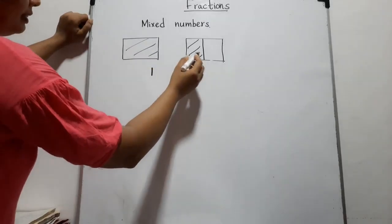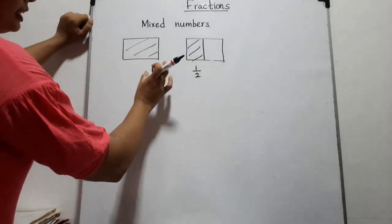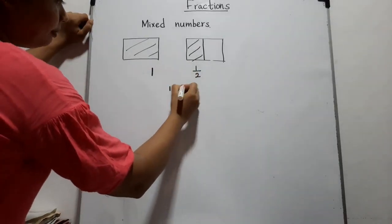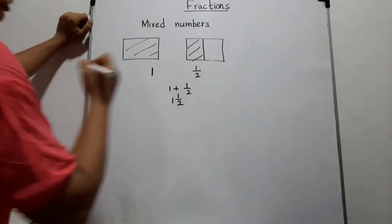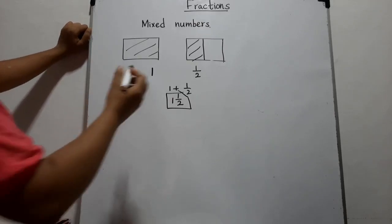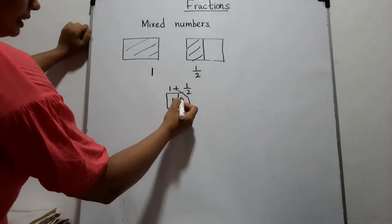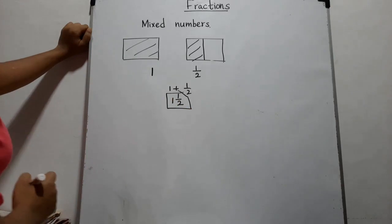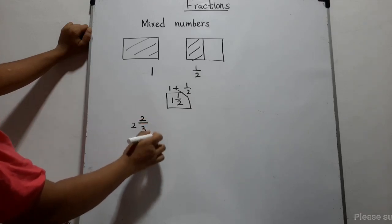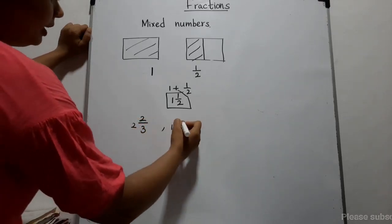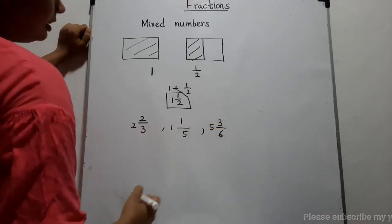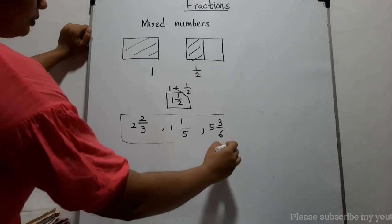We can represent this total value using the sum of these two figures: one and a half. So we can represent one and a half. Fractions like this are called mixed numbers — they consist of a whole number and a fractional part. Some examples: two and two-thirds, one and one-fifth, five and three-sixths.